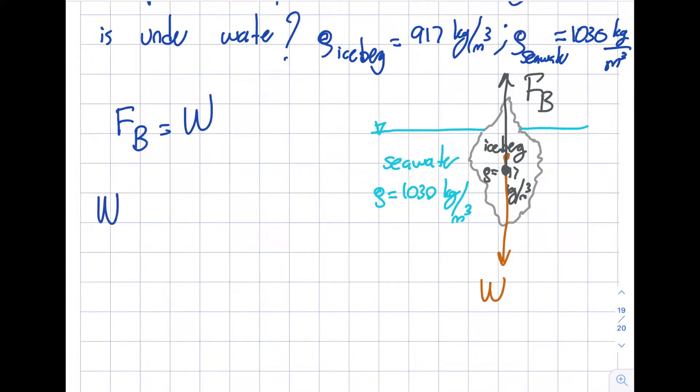The weight of the iceberg will be the specific weight times the volume. The density is given, so I know my specific weight of the iceberg. What is the volume? It is the volume of the entire iceberg, including what is above water as well.